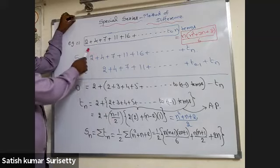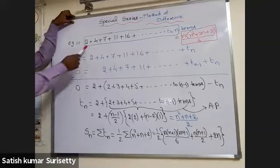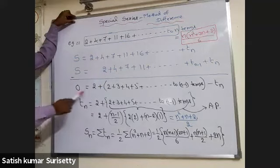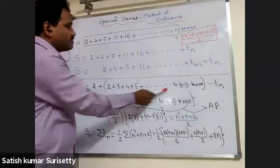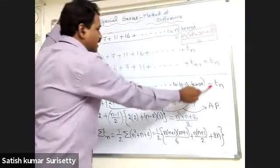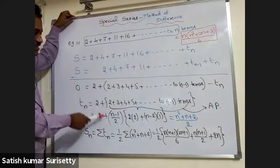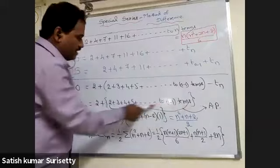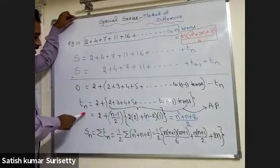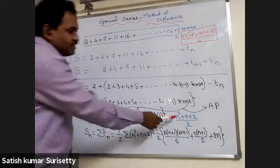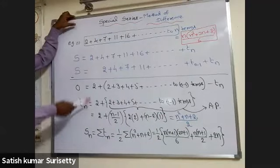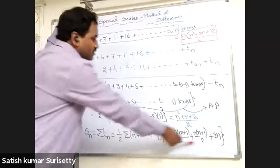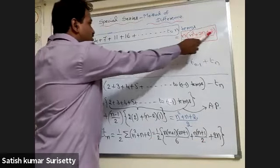In this example, the consecutive term differences are in arithmetic progression. Writing the series shifted by one position and subtracting, the left side becomes 0 and the right side gives: 2 + (2 + 3 + 4 + 5 + ... up to n−1 terms) − tn. Taking tn to the left side: tn = 2 + sum of (n−1) terms of the AP. Simplifying, the nth term is tn = (n² + n + 2) / 2. Then Sn = Σtn = (1/2)Σ(n² + n + 2), which simplifies to n(n² + 3n + 8) / 6.